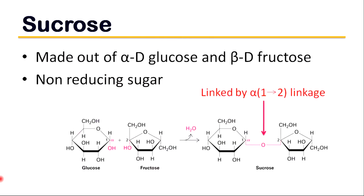Let's first talk about sucrose. Sucrose is the scientific name for table sugar. It is made up of one molecule of glucose and one molecule of fructose joined together. An alpha-1,2 linkage occurs between alpha-D glucose and beta-D fructose.